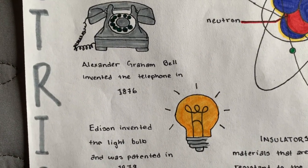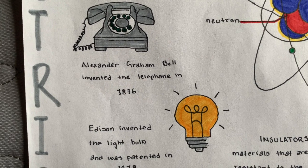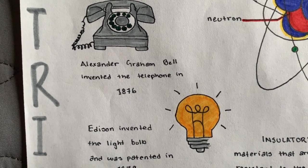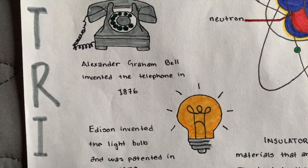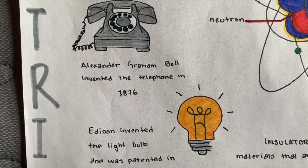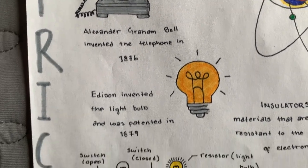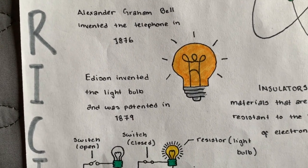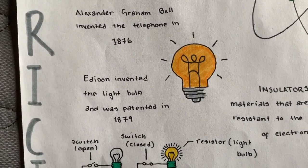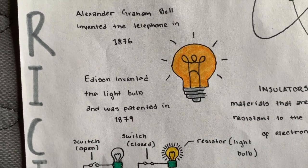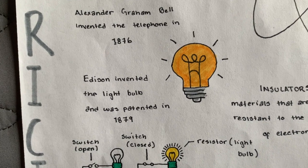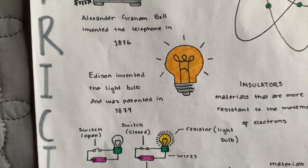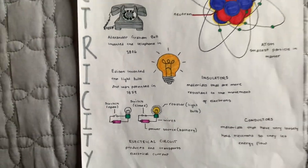Alexander Graham Bell invented the telephone in 1876. Edison invented the light bulb and it was patented in 1879.